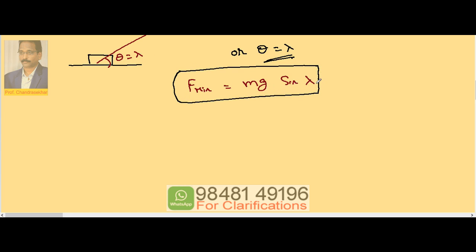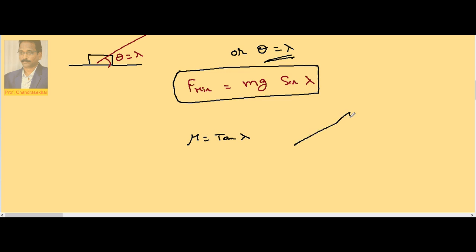Now, suppose if I want to convert this sin lambda in terms of mu, we know that mu is equal to tan lambda. Take a right angle triangle, this is my lambda. Tan means opposite by adjacent. So the hypotenuse now becomes mu square plus 1. Sin lambda is equal to opposite by hypotenuse.